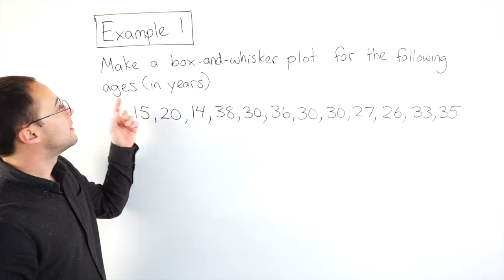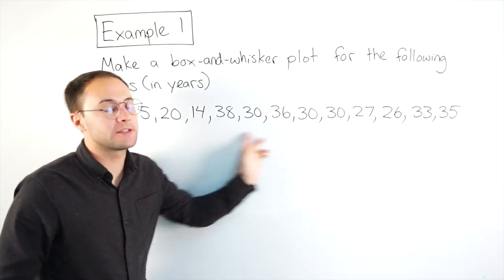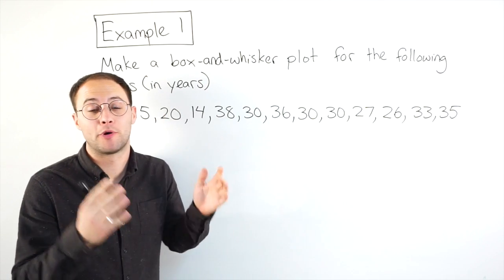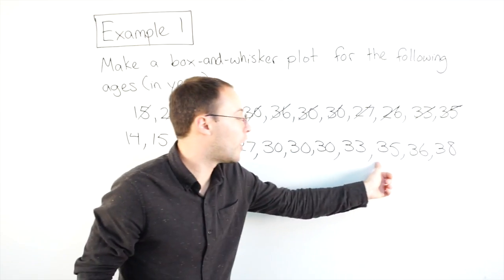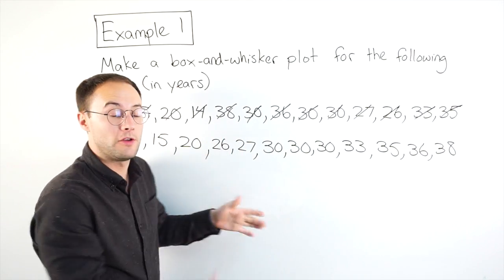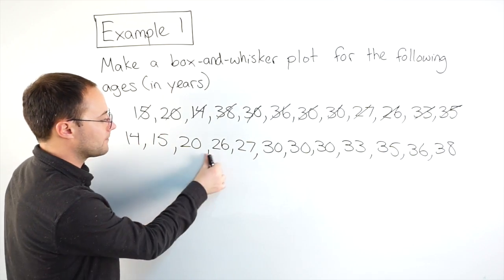Alright, example one. Make a box and whisker plot for the following ages in years. So, here is my data set. As always, the very first step is to put it in order from least to greatest. And then as always, you want to double check. I really can't stress that enough because if you forget a number, everything could be wrong. So, make sure you check.